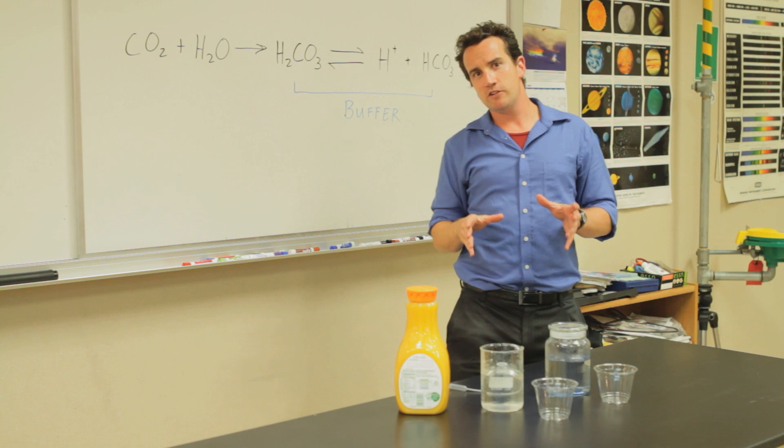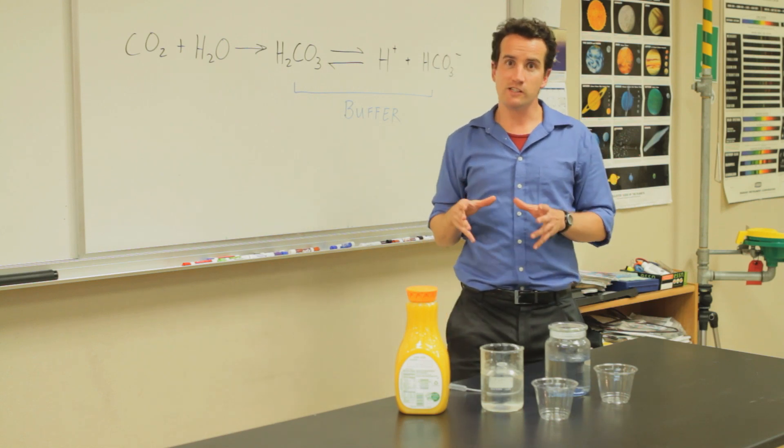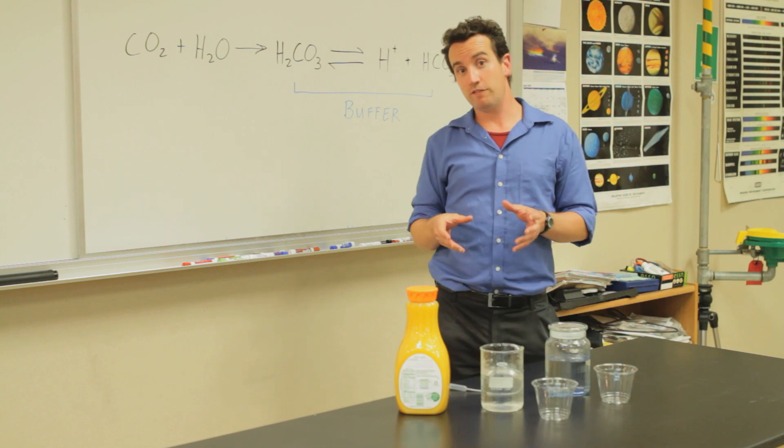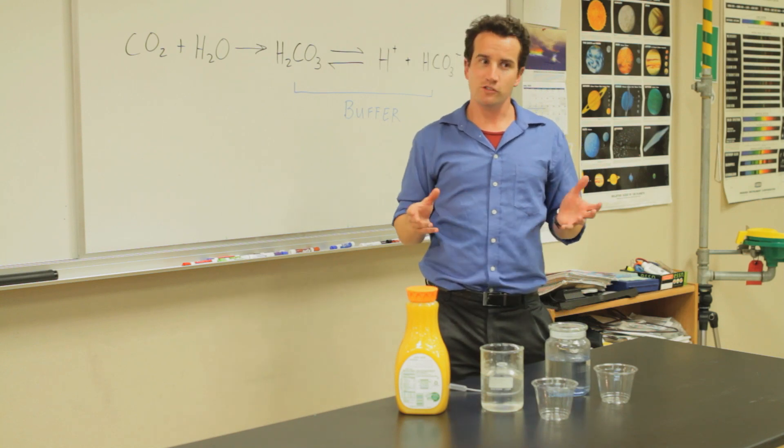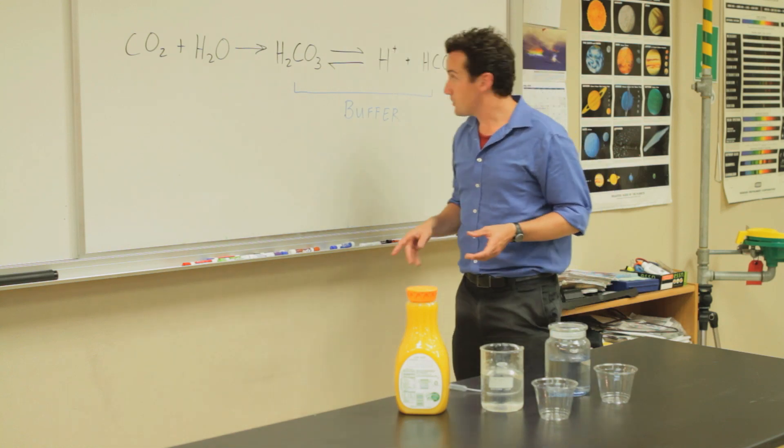The blood needs a near constant pH of about 7.4 in order for the enzymes, the proteins, to function properly or else you will go into shock when your proteins fail. Here's how it works.